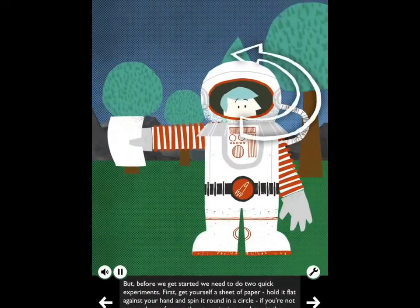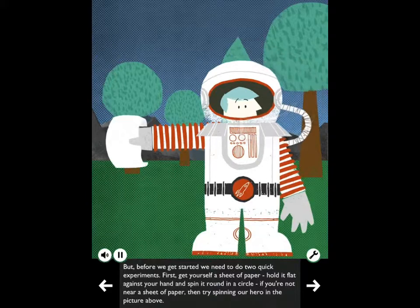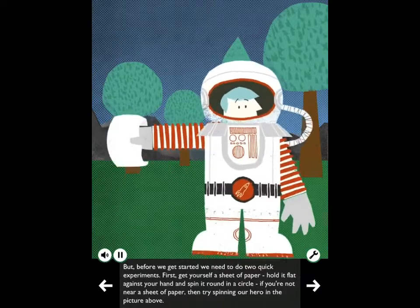Before we get started, we need to do two quick experiments. First, get yourself a sheet of paper. Hold it flat against your hand and spin it round in a circle. If you're not near a sheet of paper, then try spinning our hero in the picture above.